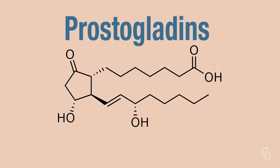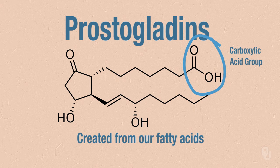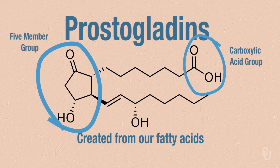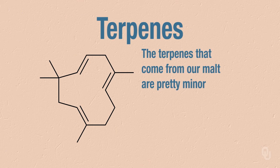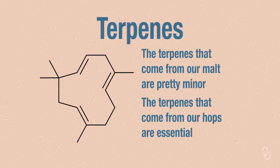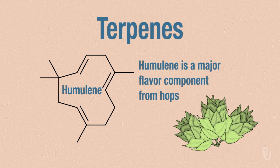Prostaglandins are created from our fatty acids. They always contain a five-membered group. If we see here, we can see the carboxylic acid group on one end, the five-membered group, and we will have 20 carbons. Our last lipid form is our terpenes. Although the terpenes that come from our malt are a very minor constituent to the final flavors, the terpenes we get from hops are going to be essential. Here we see humulene, a major component of the flavor compounds we get from our hops.